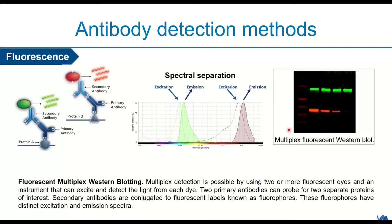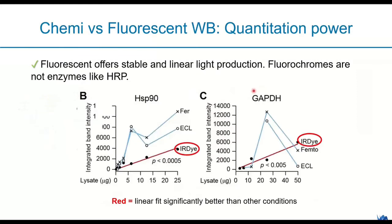In terms of signal linearity, fluorescence offers stable and linear light production because fluorophores — unlike HRP enzyme — produce signals that are directly linear. This is essential for quantitative western blot: when the amount of protein lysate increases, the fluorescent signal also increases proportionally, giving you a better linear fit than chemiluminescence and thus higher quantitation power.